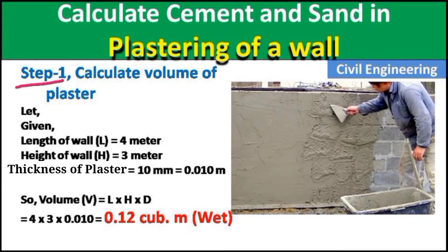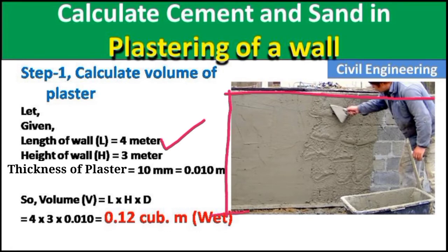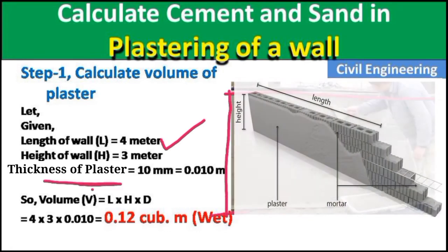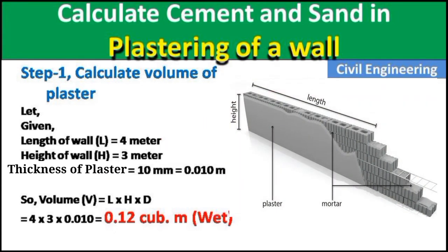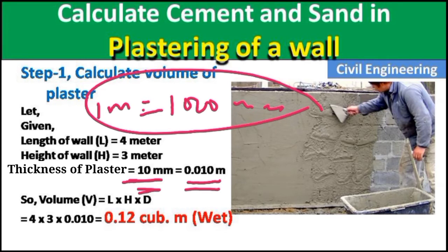Let's start. In step number one, we calculate the volume of the plaster. The given dimensions are: length of wall = 4 meters, height = 3 meters, and thickness = 10 mm. Now, 10 mm equals 0.010 meter, because 1 meter equals 1000 mm.